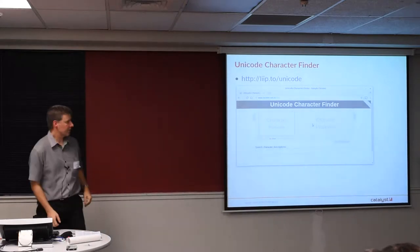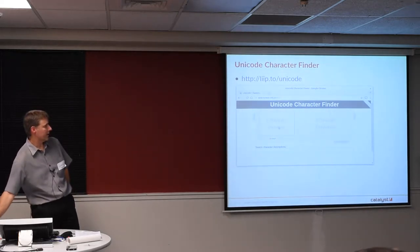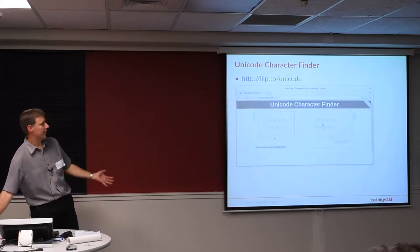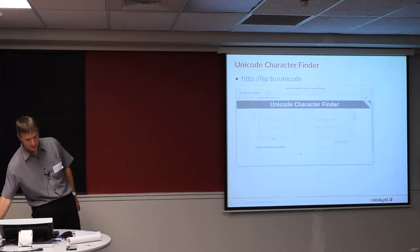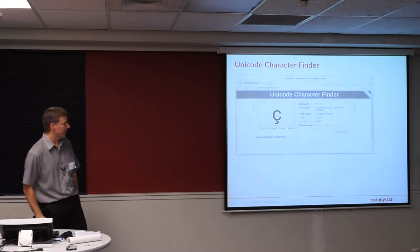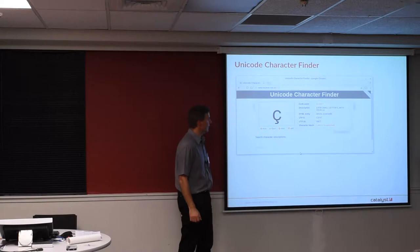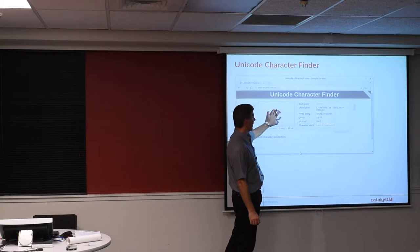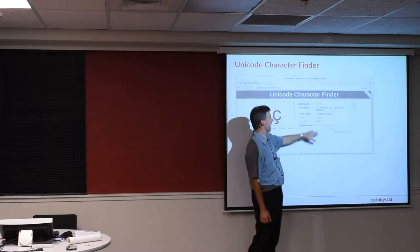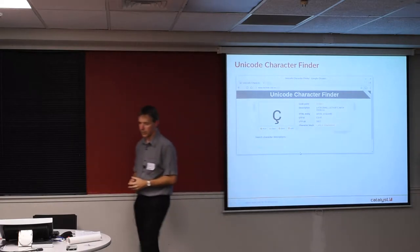There are three main areas. There's an area where the character will be displayed, an area where information about the character will be displayed, and then a search box so you can look for things. If you have a character in here — which you can paste in, type in, or find via search — then the details of it, including links to more information, will be over in the properties area.